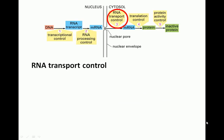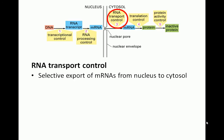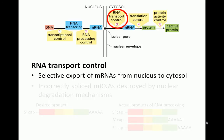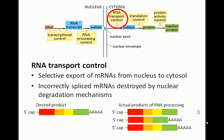RNA transport control involves controlling which mRNAs are sent from the nucleus to the cytosol to be translated. If there is an error in splicing, for example, the cell will prevent that mRNA from being exported by using nuclear degradation mechanisms.